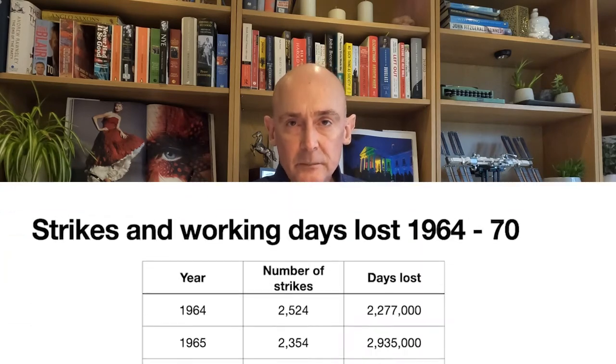The first thing I'm going to show you are statistics to give you an idea of the number of strike days lost during the time Harold Wilson is Prime Minister, 1964 to 1970. Hopefully you can see that if we go all the way through to late 1967, the number of strike days lost doesn't increase dramatically and there's no significant change in the number of strikes. But as soon as we get to 1968 and 1969, we see the number of days lost rising dramatically, particularly as we get through to 1970.